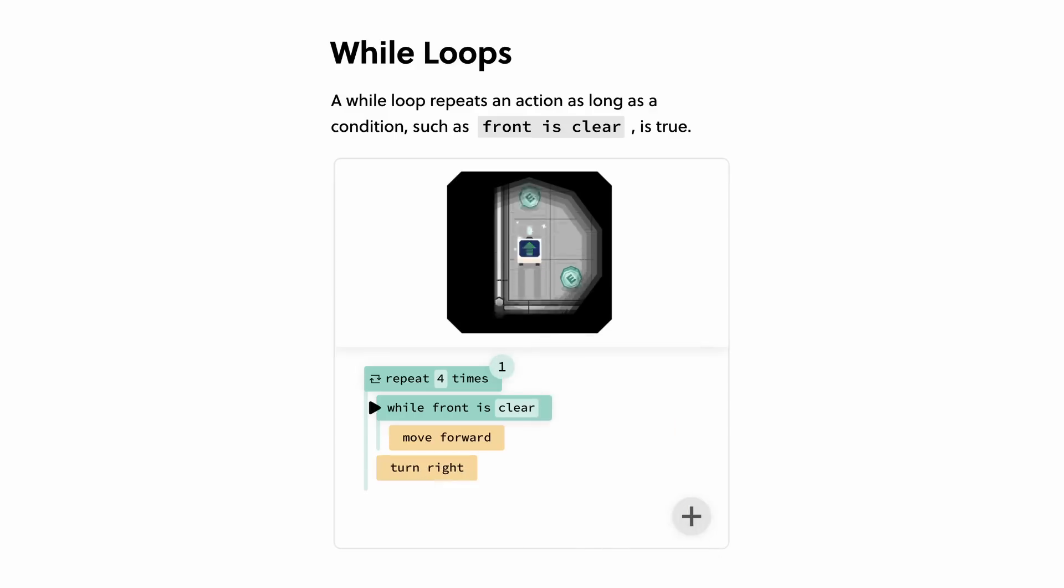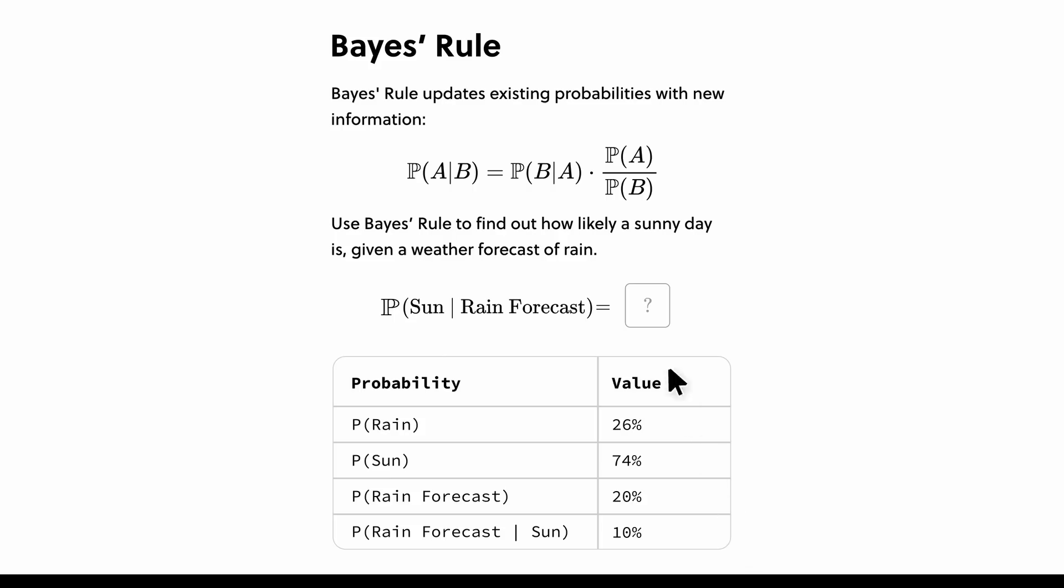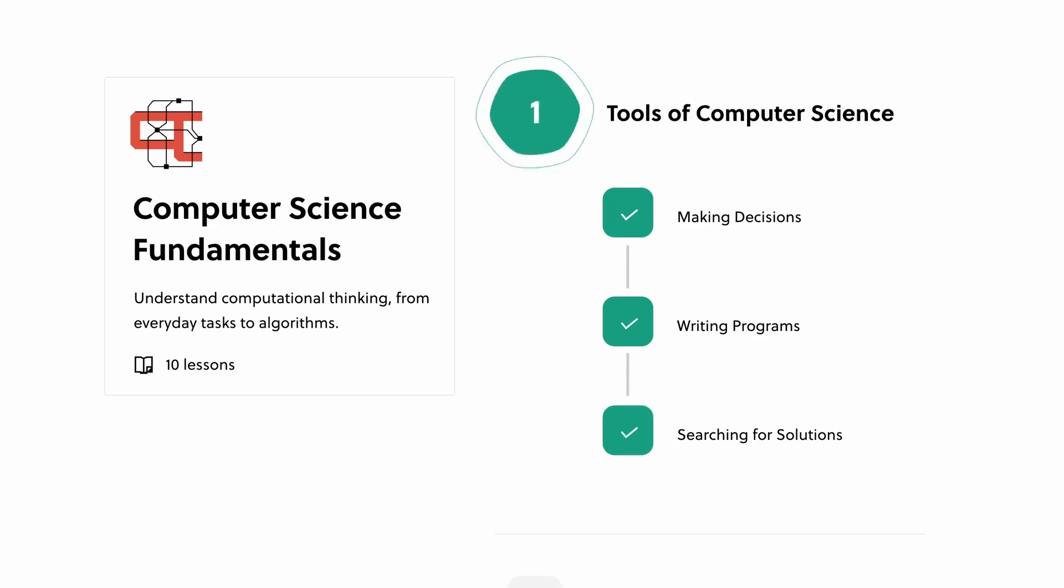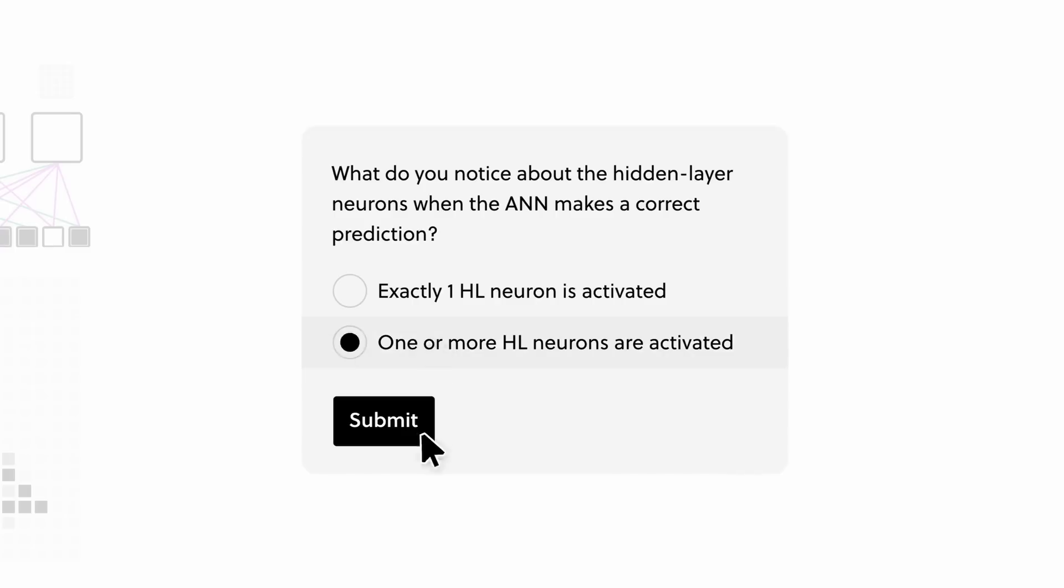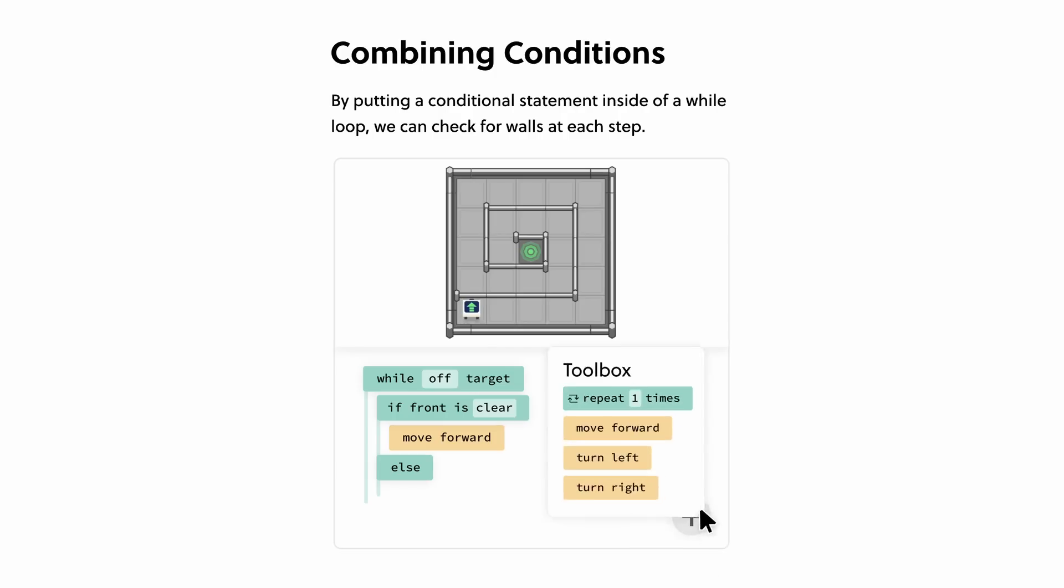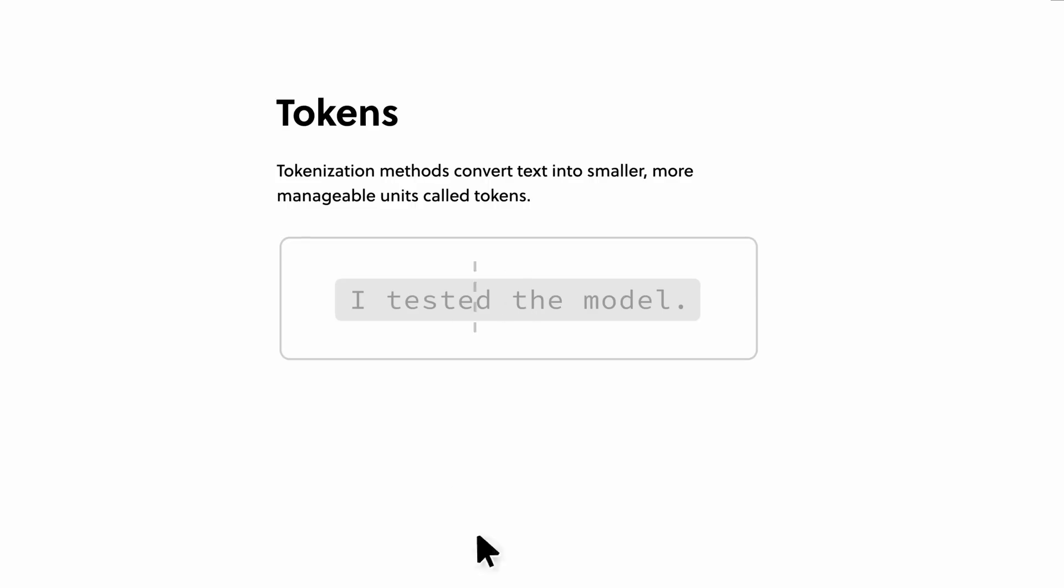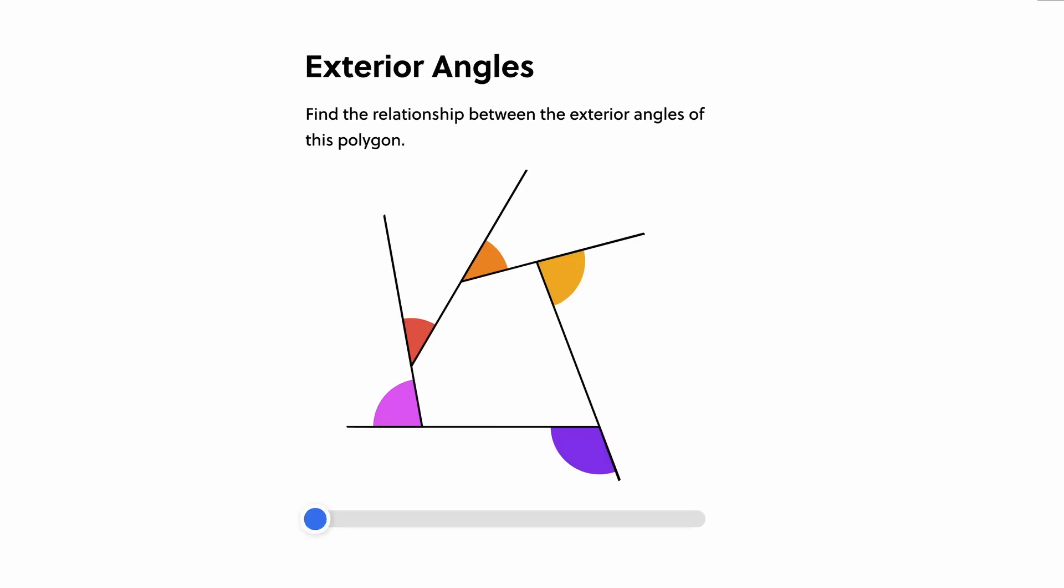Not only that, but all the content on Brilliant is crafted by an award-winning team of teachers, researchers, and professionals from MIT, Caltech, Duke, Microsoft, Google, and more. And by using Brilliant, you're going to also improve your critical thinking skills because they believe in problem solving, not memorizing. So you'll be getting smarter and you'll also become a better thinker.